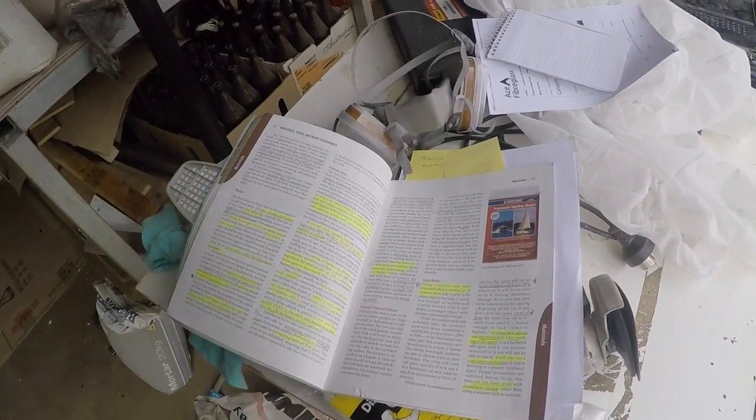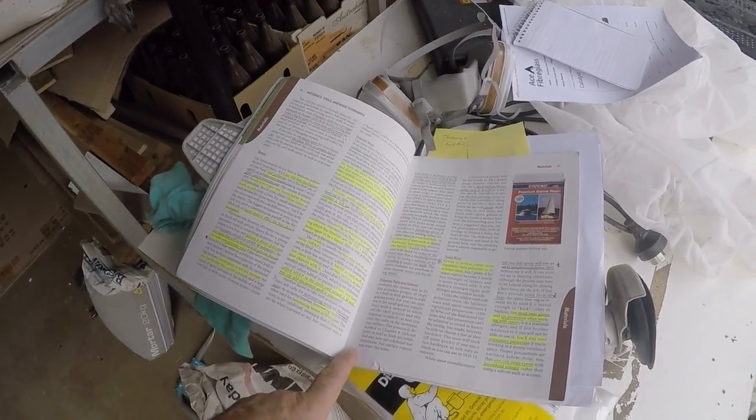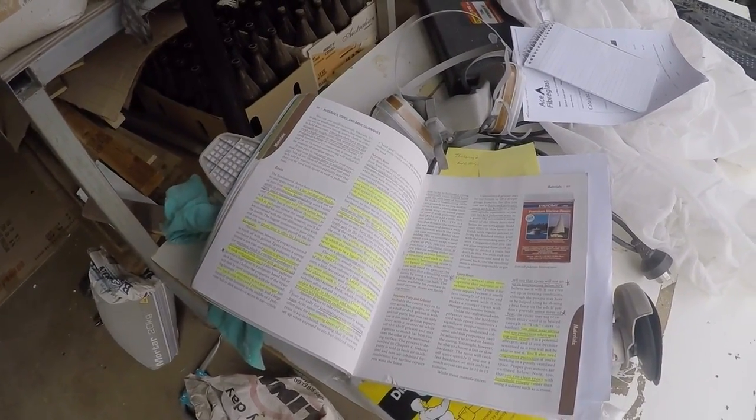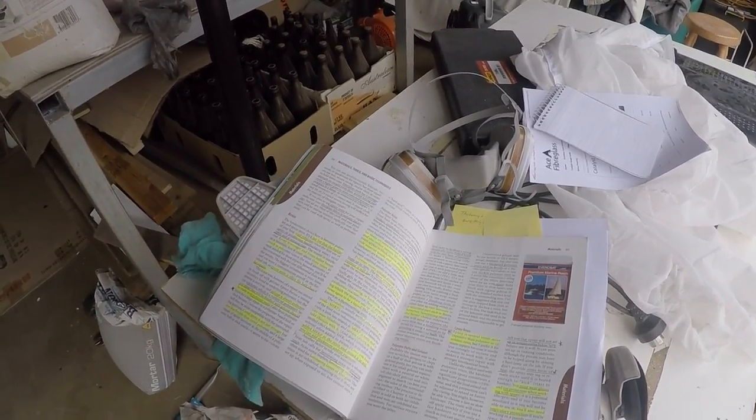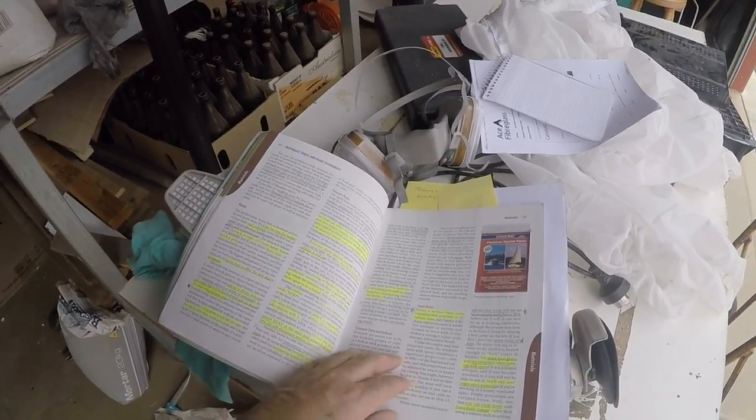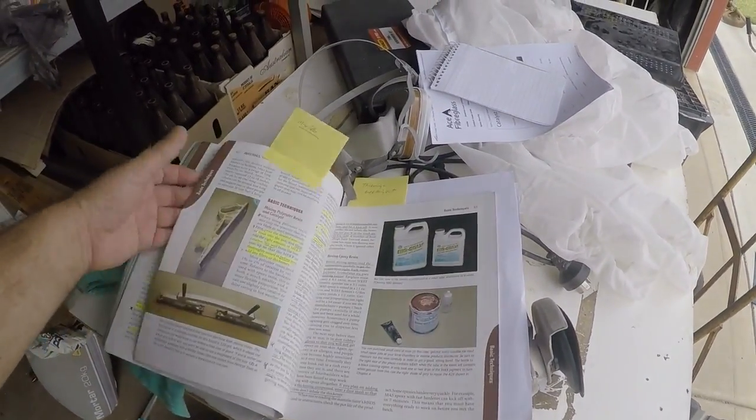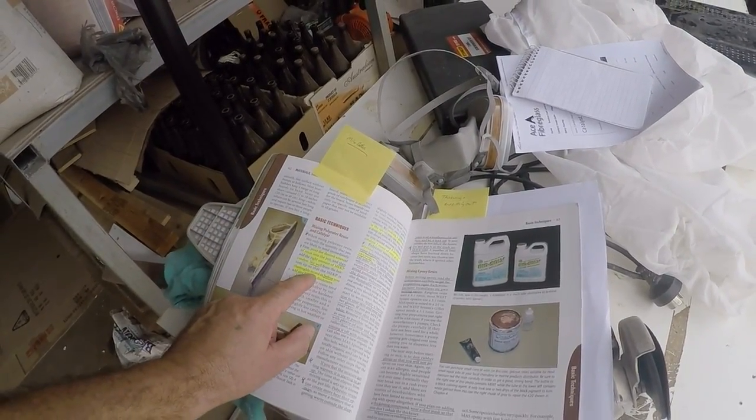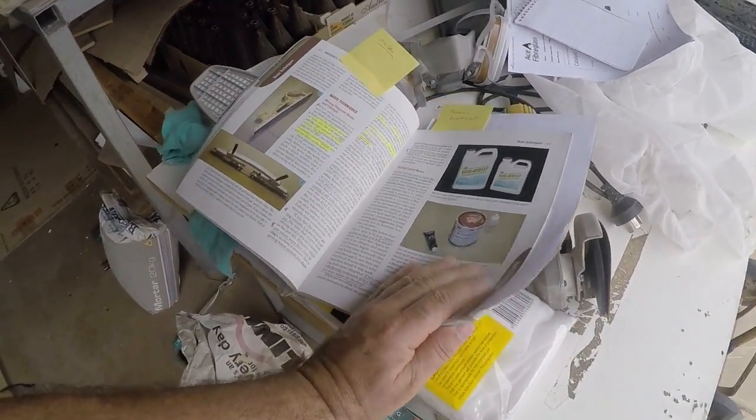You gotta mix your resin and hardener first, then you add your fillers. What I did yesterday was I went the other way around and it's probably why I wasted so much. In here it says stir well before you add any fillers or thickness. Now why didn't I read this book? Well, probably because I was in a rush and trying to get it done before it got too hot.